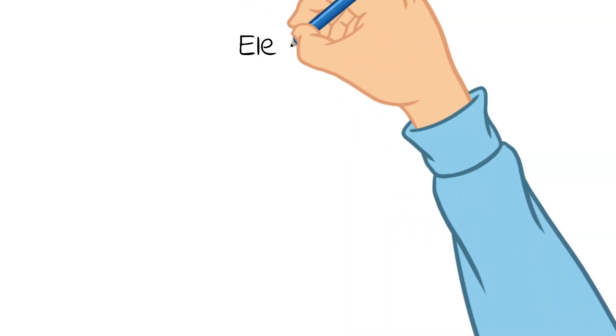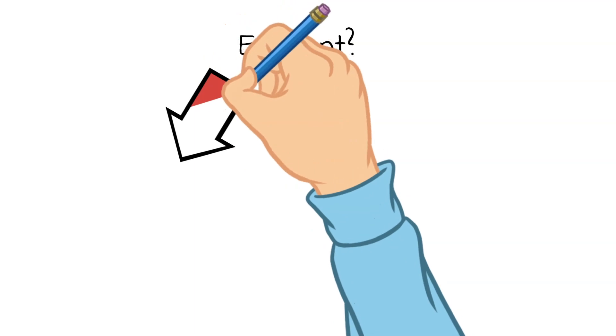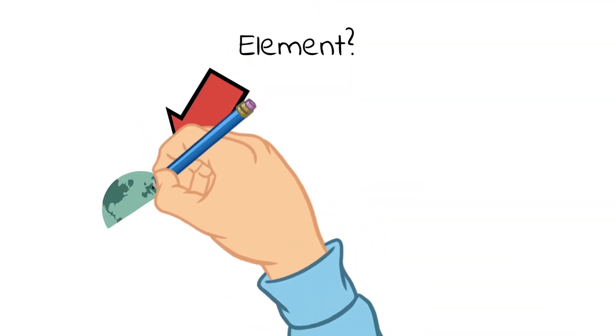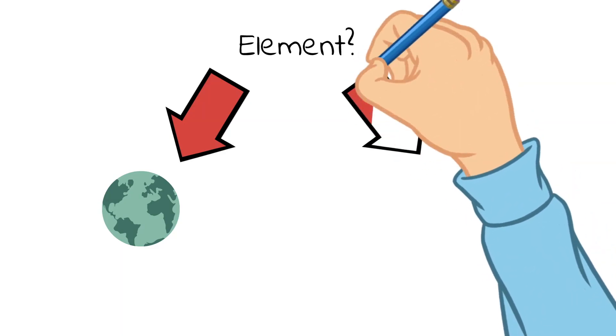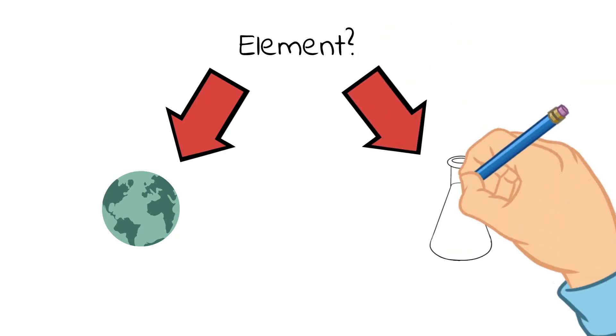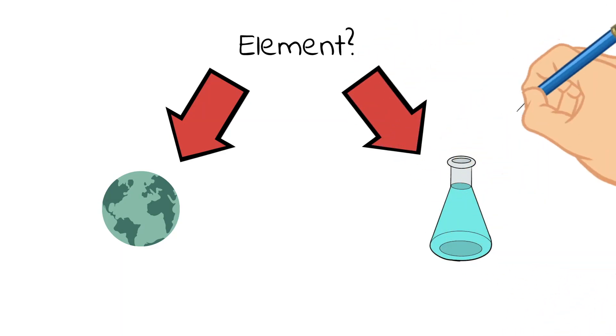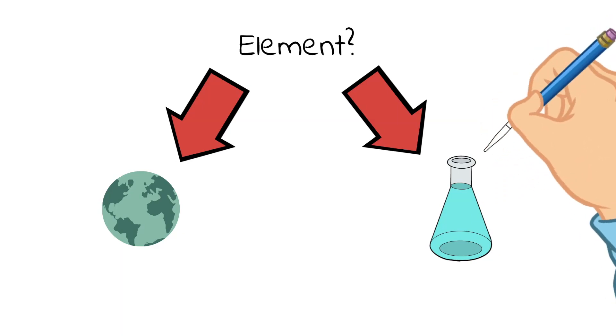Without further ado, let's start doodling. Today, we are going to define what an element is. An element is a substance which is either naturally occurring on earth or made in a lab, and it is made all from the same type of atom.